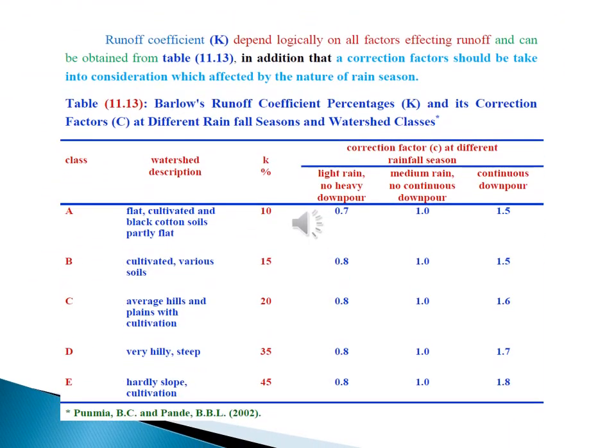Runoff coefficient depends logically on all vectors affecting runoff and can be computed from the enclosed table showing Barlow's runoff coefficient percentage and its correction factor at different rainfall seasons and watershed classes.